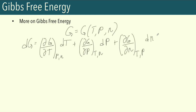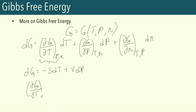Recall we also derived DG = −SDT + VDP for a closed system of fixed composition. Comparing this to our total differential expression, we can equate the partial derivatives. The partial of G with respect to T at constant pressure and number of moles equals −S. The partial of G with respect to P at constant temperature and number of moles equals V.